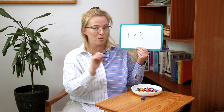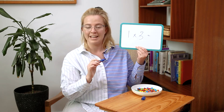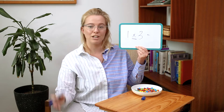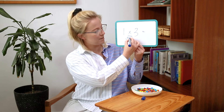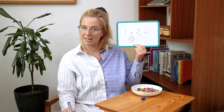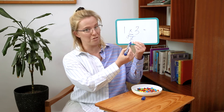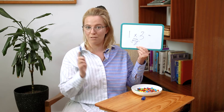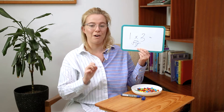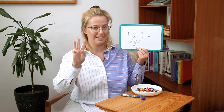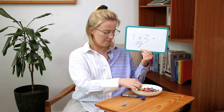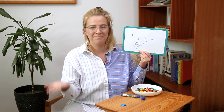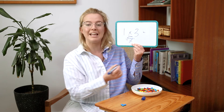Here is our next equation: one times three equals. Something I find really helpful when doing multiplication is when I read the times or x symbol, I read it as 'groups of.' So I can read this as one group of three equals, and that helps me figure out the answer. I have one group of three, so I'm going to put three counters in it — one, two, three. So one times three, or one group of three, equals three.